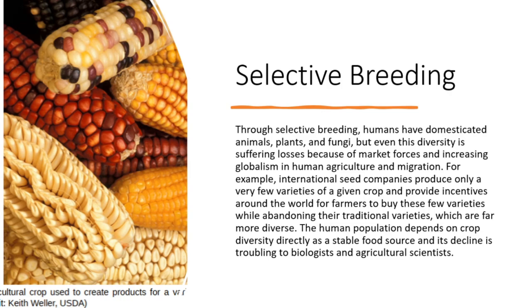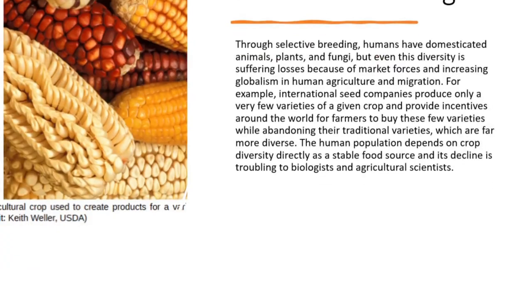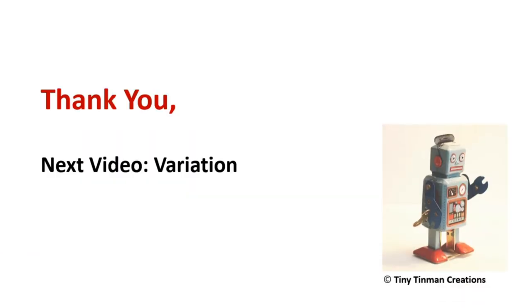The human population depends on crop diversity directly as a stable food source, and its decline is troubling to biologists and agricultural scientists. Thank you — next video: variation.